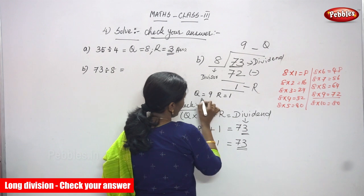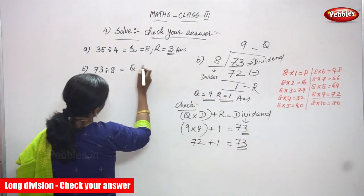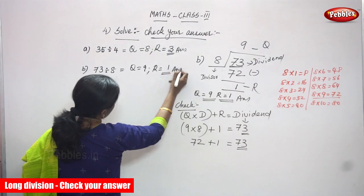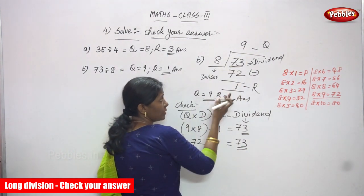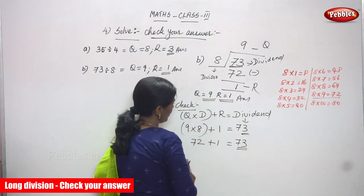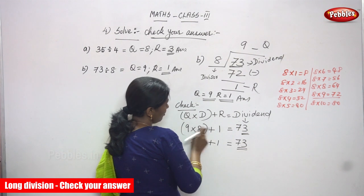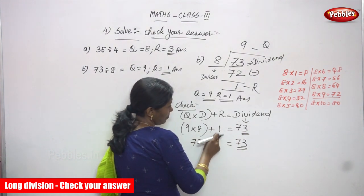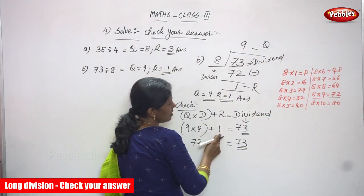That means your quotient and remainder are both correct. Quotient is 9 and remainder is 1 — this is the right answer for question B. To verify: quotient × divisor + remainder = dividend. Quotient is 9, divisor is 8, so 9 × 8 = 72, plus remainder 1 gives 72 + 1 = 73. You get the dividend, confirming the answer is correct.